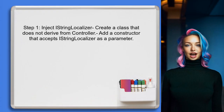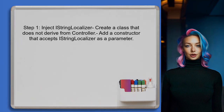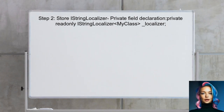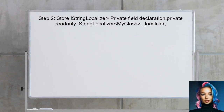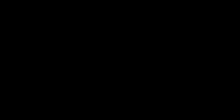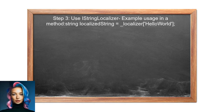To use the IStringLocalizer interface in a class that does not derive from a controller, you should first inject the IStringLocalizer into the class through its constructor. Next, store the injected IStringLocalizer in a private field within the class. This allows you to access localization resources throughout the class methods. You can then utilize IStringLocalizer within your class methods to retrieve localized strings by calling the localizer with the appropriate key.